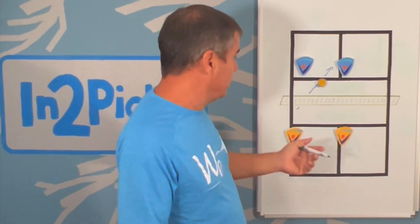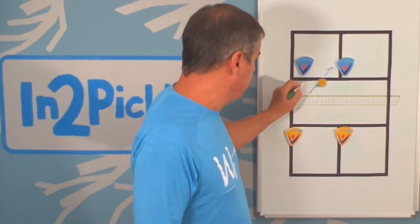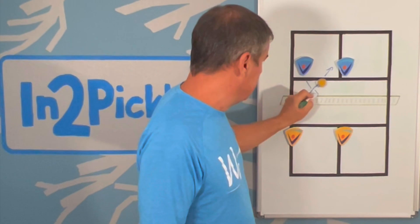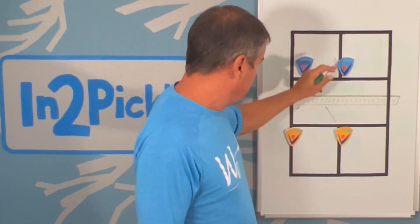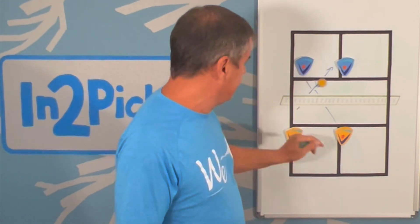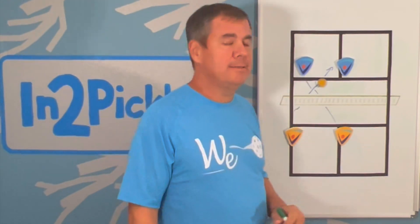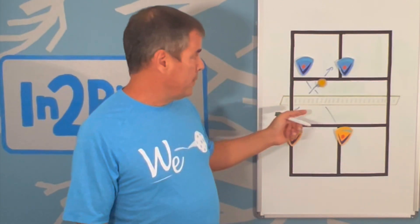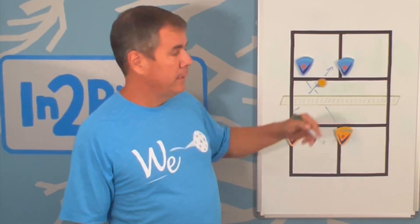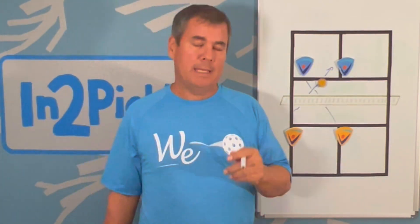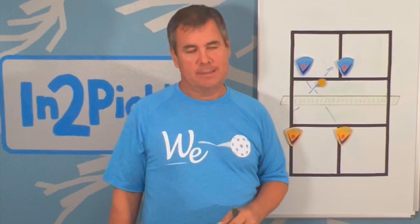If you want to see the complete X, what you would do is draw a line like this. Now you can see the X — there are the two axes of the X. Based on Respect the X, this player should hit the ball even if it involves crossing over the center line.